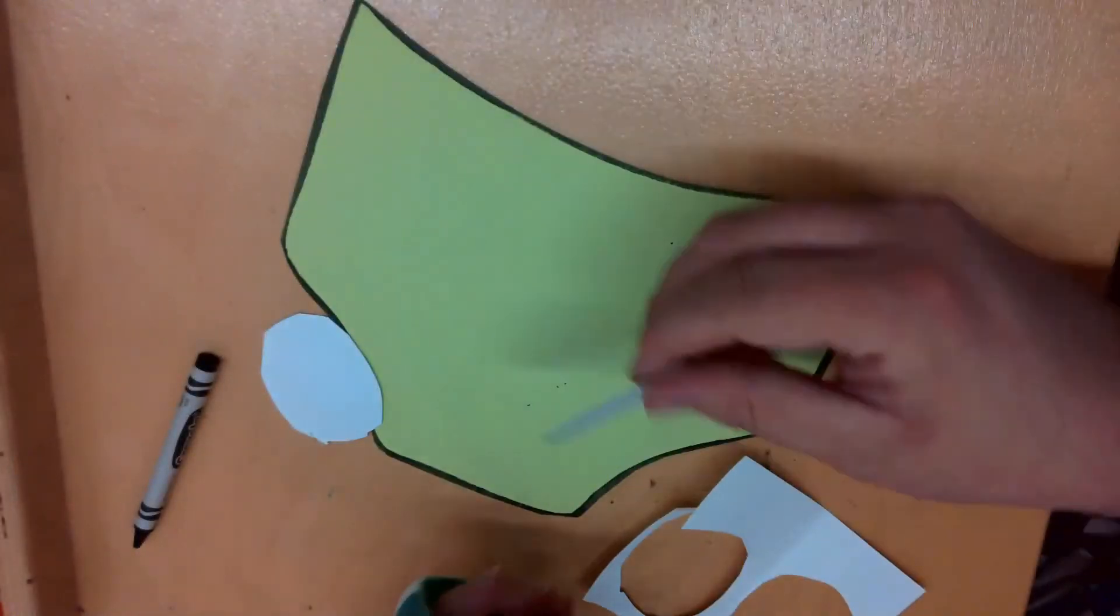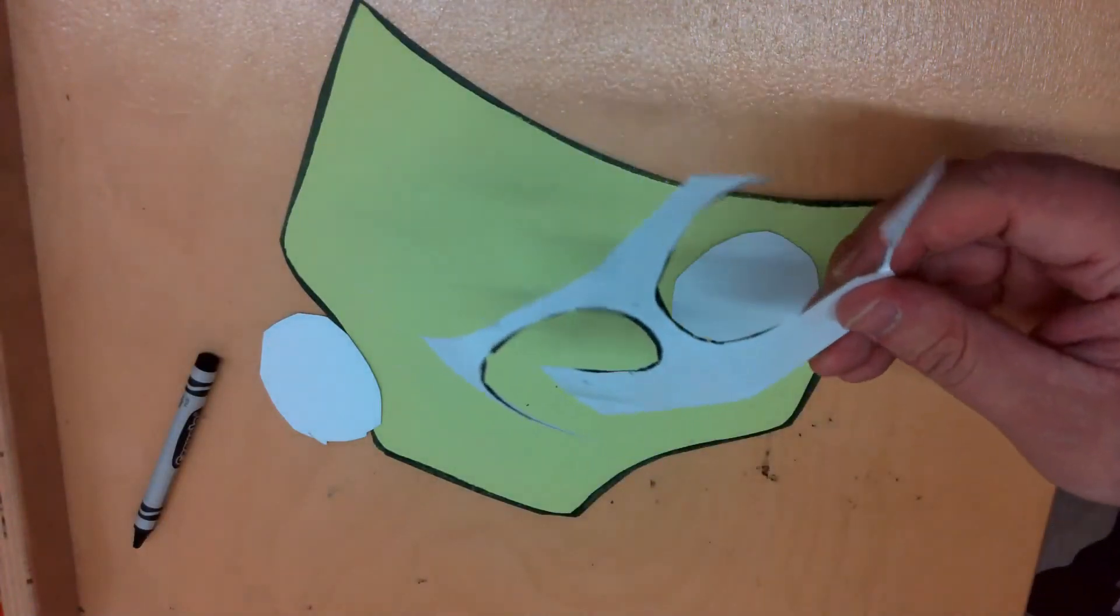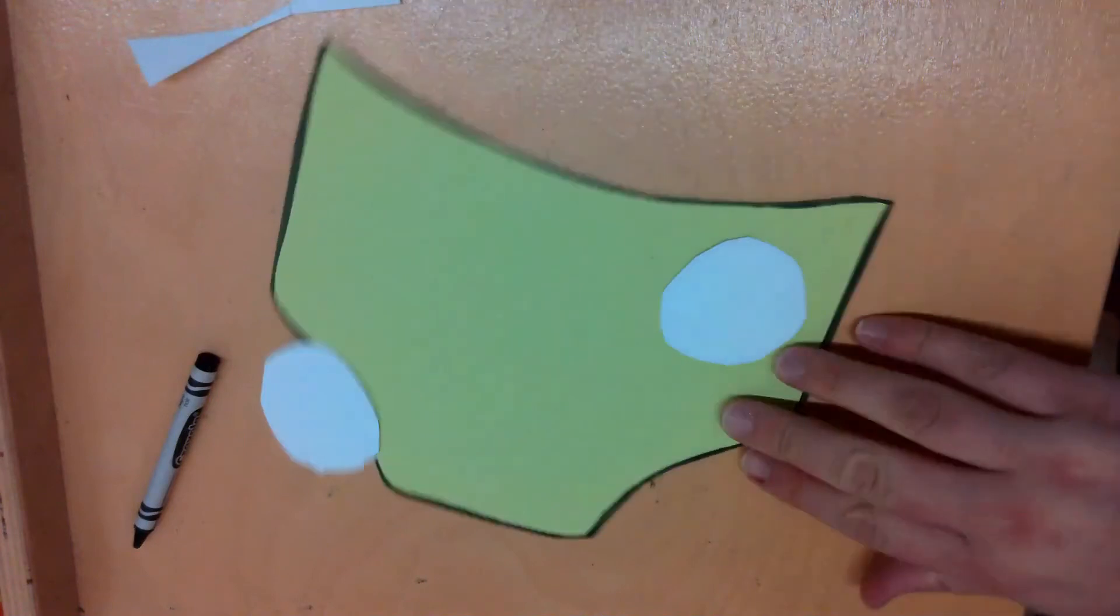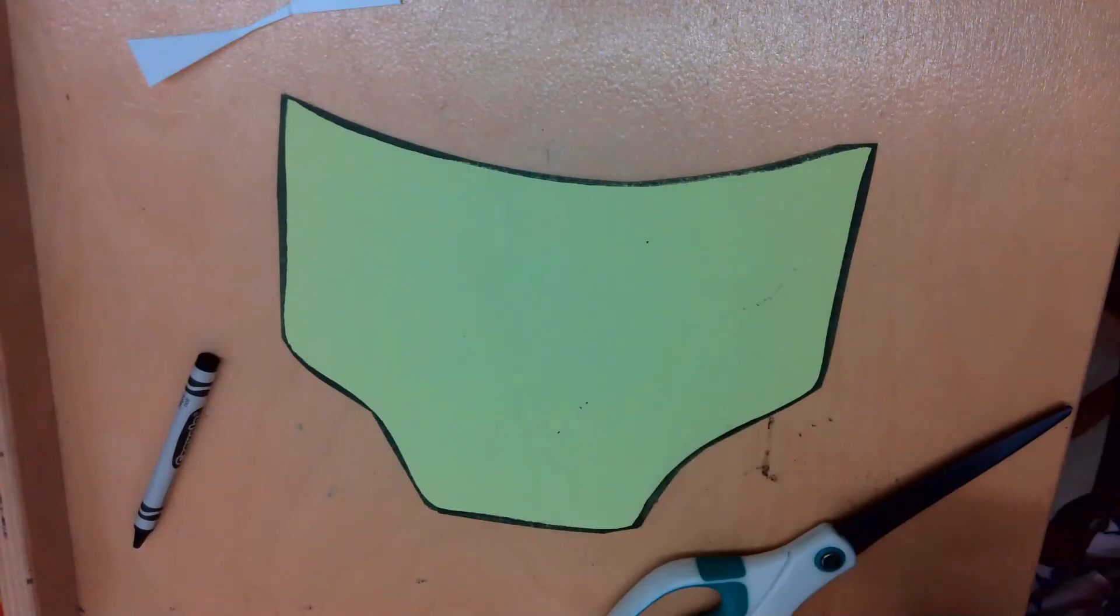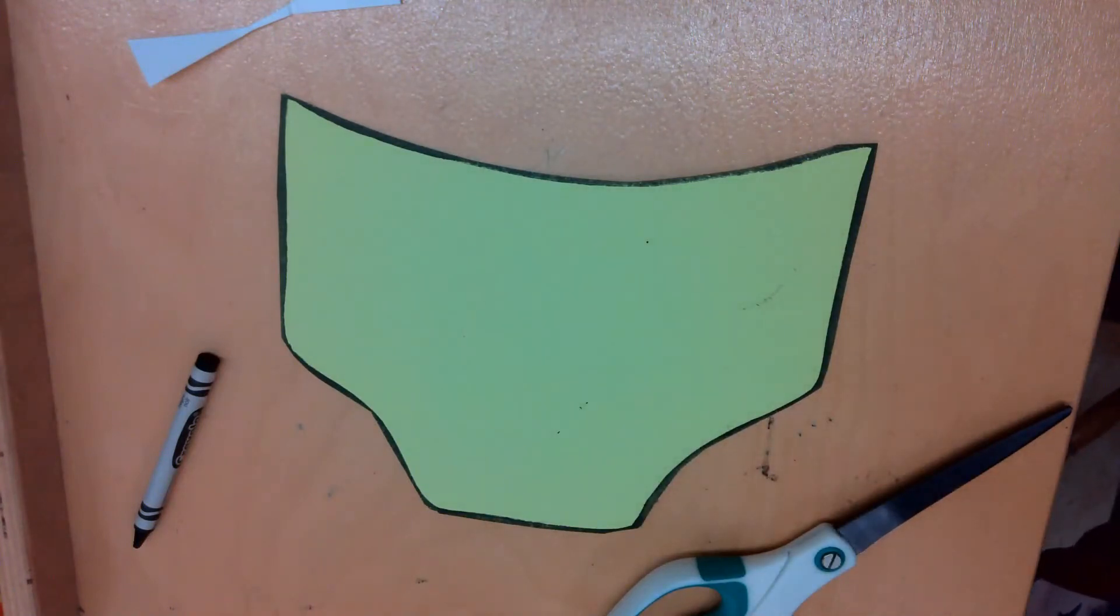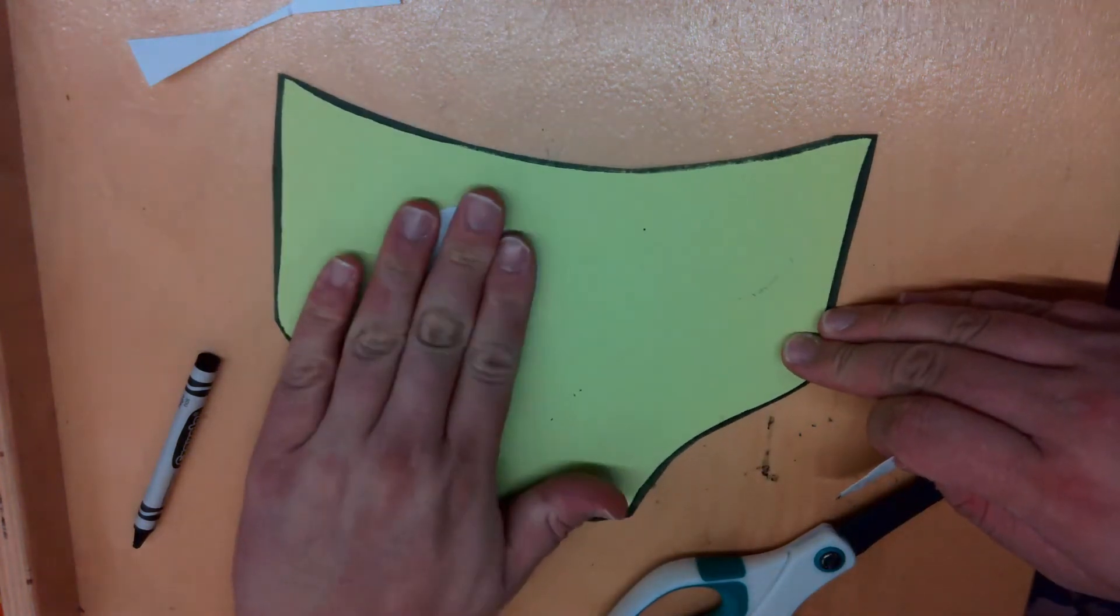Now, you're going to take that extra paper and you're not going to throw it away yet. You're going to keep using this, so go ahead and put it to the side. You're going to take your eyeballs and put some glue on the back side and stick them to your underwear. So putting some glue on my eyeballs, stick them on down.